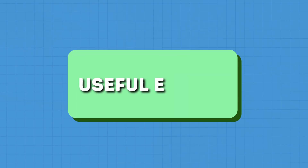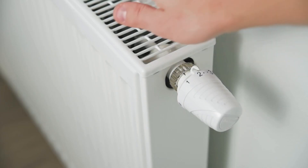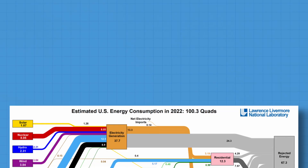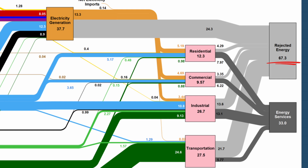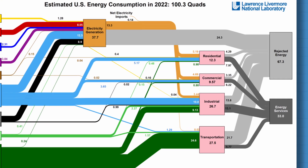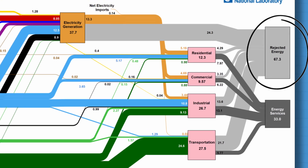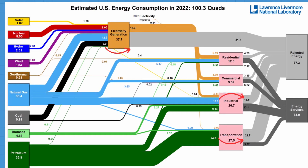What we actually use is called useful energy, which provides us with services such as heating, cooking, driving, lighting — you name it. This Sankey diagram illustrates this point well, as it shows how much energy is actually wasted, called rejected energy. If you look on the right, you can see that almost two-thirds of the total energy is wasted, mostly as heat.